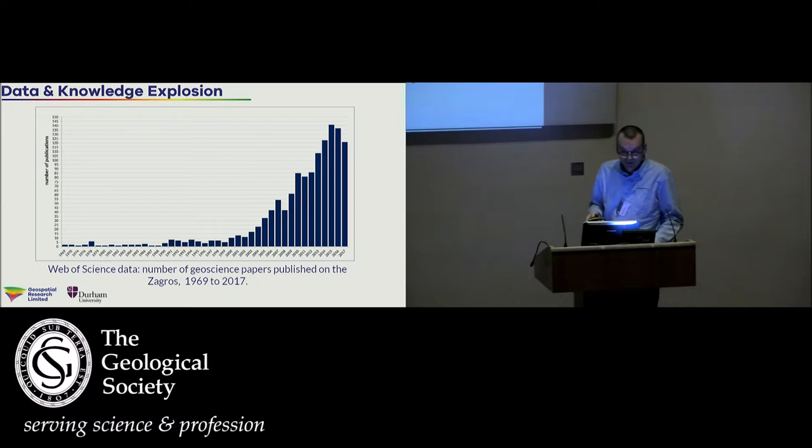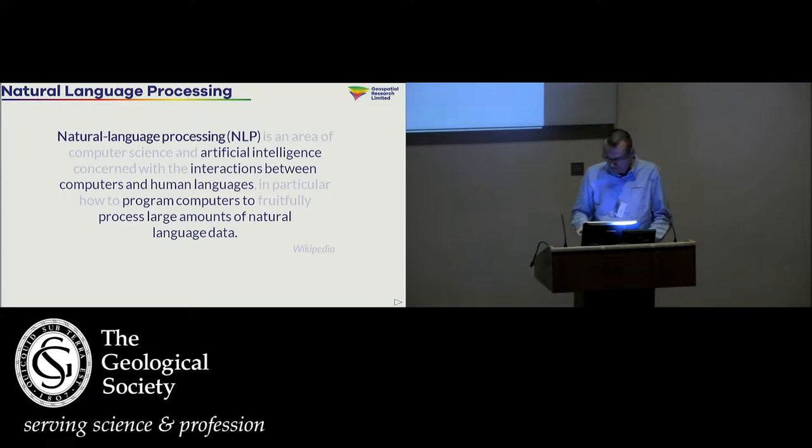Another indication of the explosion in the amount of data, in terms of unstructured text information, this is just one example. These are amounts of geoscience papers published on the Zagros since 1969. We can see around about the 2000s a very steep increase, maybe dipping off in relation to perhaps as a consequence of geopolitical events recently, but maybe not. There are other little dips and it keeps on going. There's a lot of text information out there.